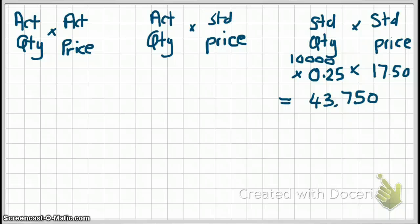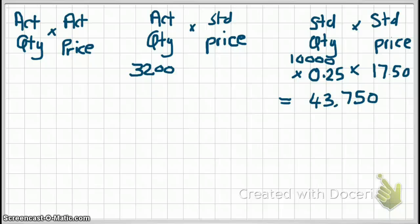Next, we take our actual quantity of labor multiplied by the standard price. The actual quantity of labor hours spent was 3,200 hours. We multiply that by the standard price of $17.50, giving us $56,000.